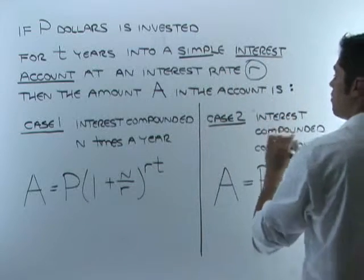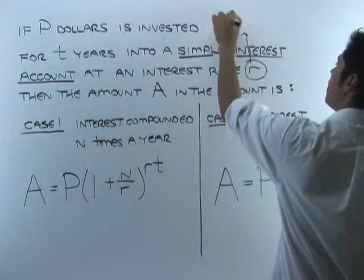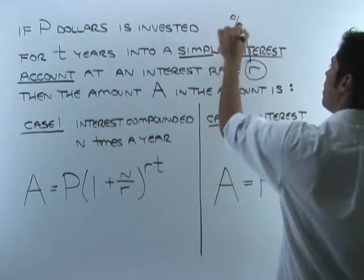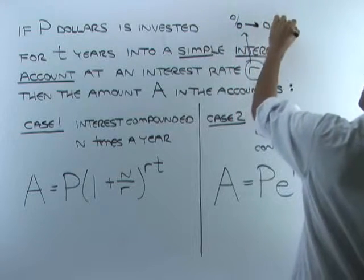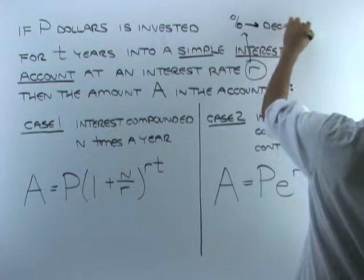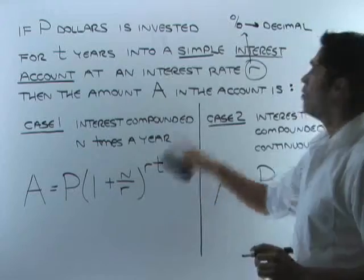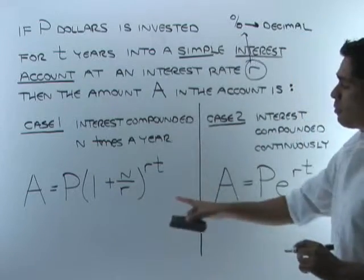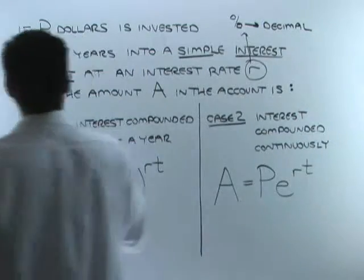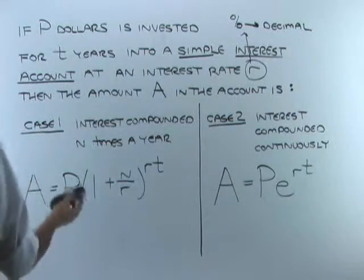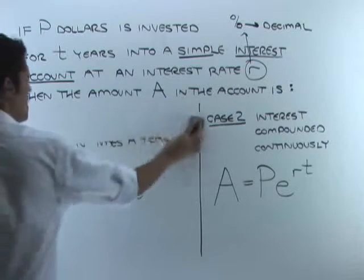One important note: when dealing with R in these problems, most of the time it's given to you as a percentage and you want to convert that to a decimal. You don't want to put the percentage in — you want to put the decimal form of the number.